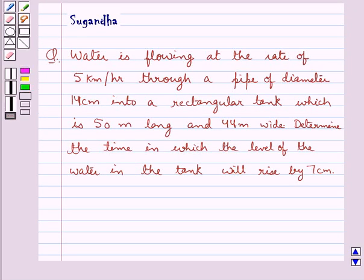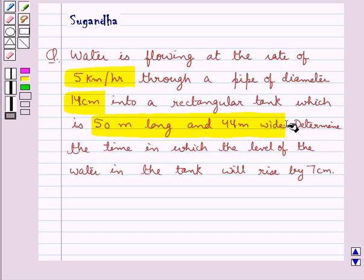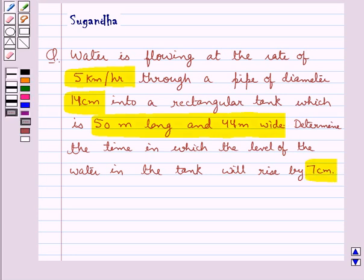Hello and welcome to the session. In this session we discuss the following question: water is flowing at the rate of 5 km per hour through a pipe of diameter 14 cm into a rectangular tank which is 50 meters long and 44 meters wide. Determine the time in which the level of the water in the tank will rise by 7 cm.